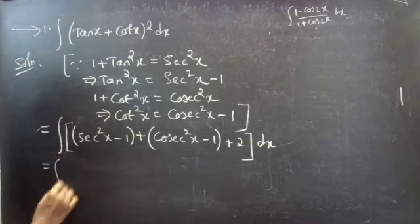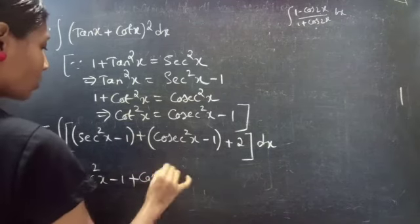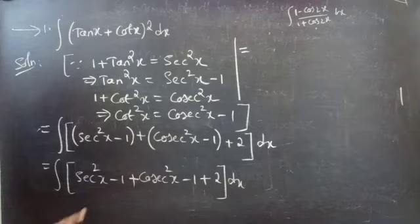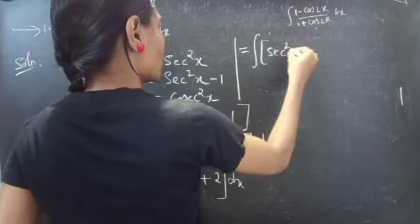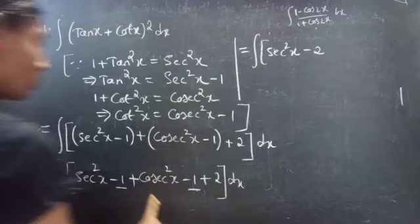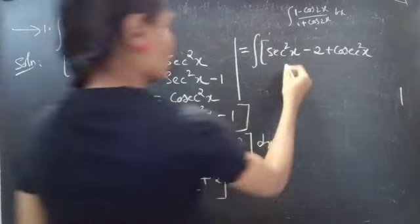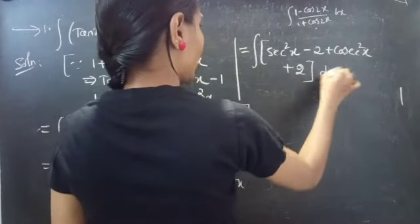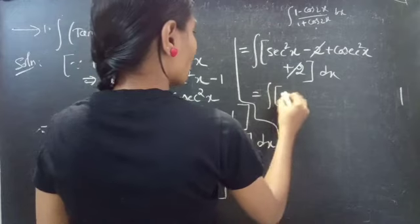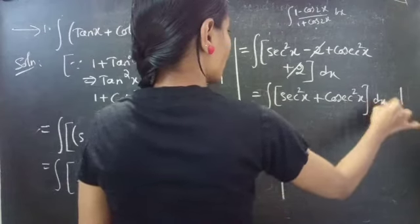This equals the integral of sec²x - 1 + csc²x - 1 + 2 dx. Combining constants: -1 - 1 + 2 = 0, so minus 2 and plus 2 cancel. We are left with the integral of sec²x + csc²x dx.